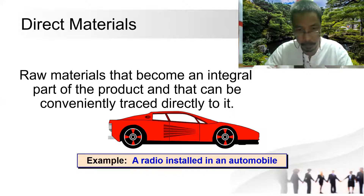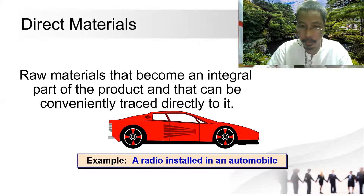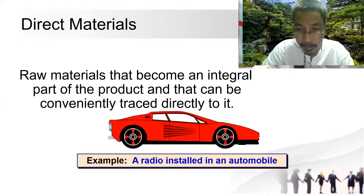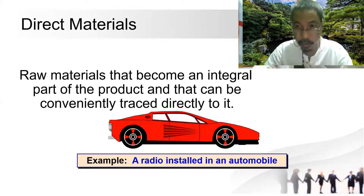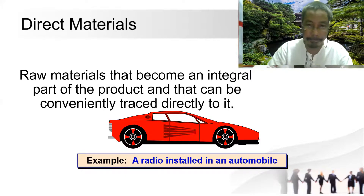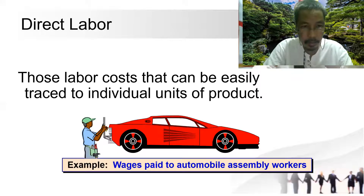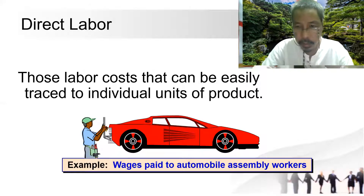Some raw materials that are an assembly and part of the automobile — those are direct materials. What about direct labor? Direct labor refers to those labor costs that can be easily traced to individual units or product.